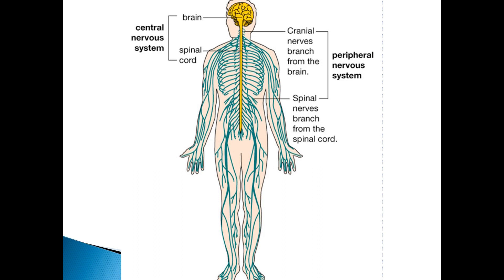Here we have a great diagram that illustrates the difference between these two parts of your nervous system. In yellow we have the central nervous system, which consists of the brain and the spinal cord, and then branching off the spinal cord we have nerves in blue — these are our peripheral nerves and they form our peripheral nervous system.